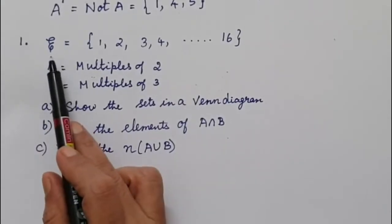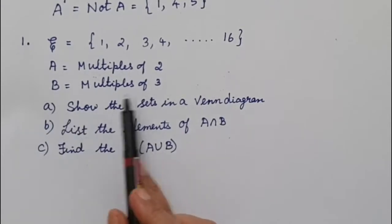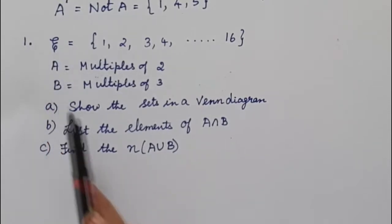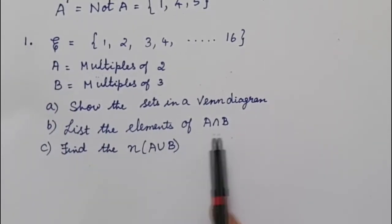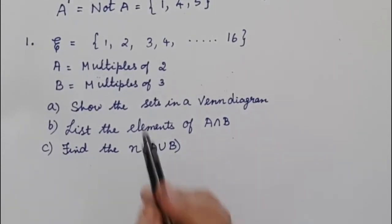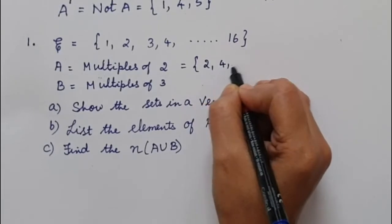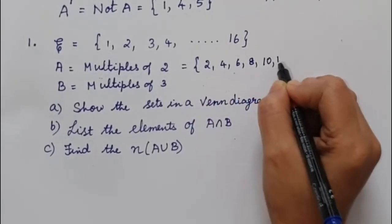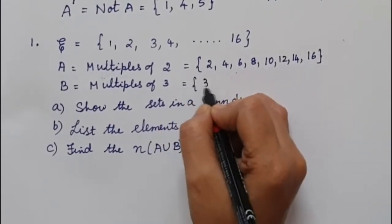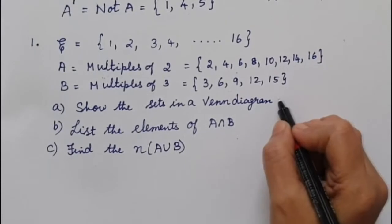The first question: the universal set equals numbers from 1 to 16, A equals multiples of 2, and B equals multiples of 3. Part A: show the sets in a Venn diagram. Part B: list the elements of A intersection B. Part C: find the number of elements in A union B. So, A equals {2, 4, 6, 8, 10, 12, 14, 16} and B equals {3, 6, 9, 12, 15}. Now show the sets in a Venn diagram.